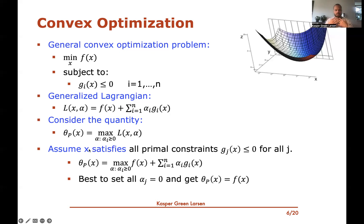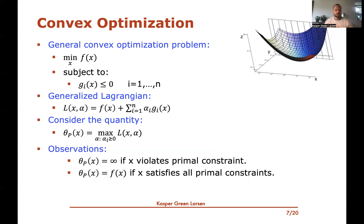On the other hand, if x satisfies all the primal constraints — meaning g_j(x) ≤ 0 for every j — then since we must set all Lagrange multipliers non-negatively and all g_i(x) values are non-positive, the best we can do while maximizing is set them all to zero. This gives a value of exactly f(x), the original objective. So θ_p(x) equals infinity when x violates a primal constraint, and equals f(x) when x satisfies all primal constraints.